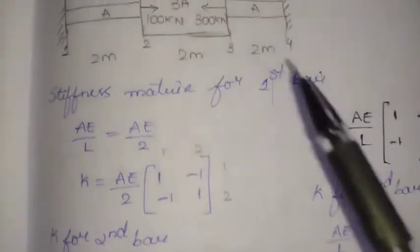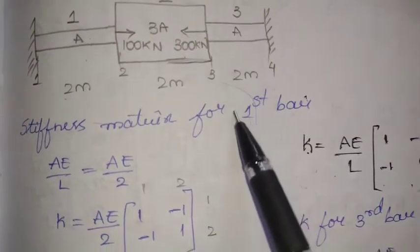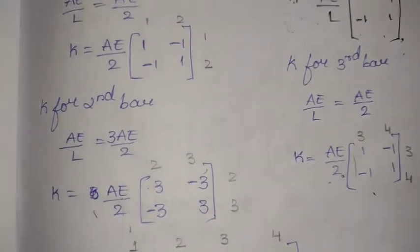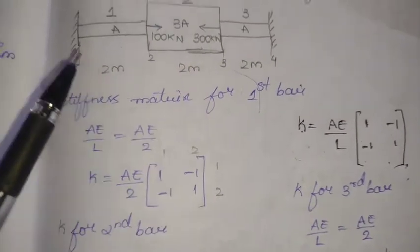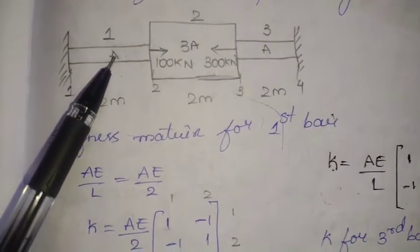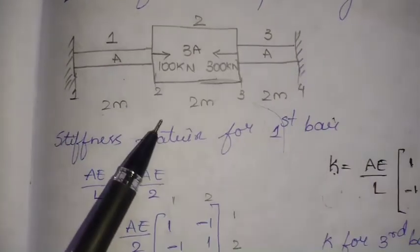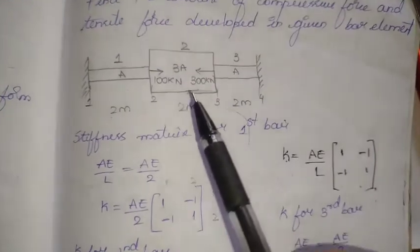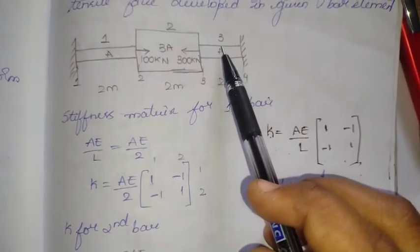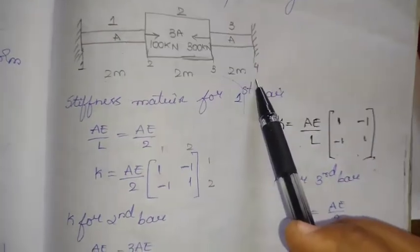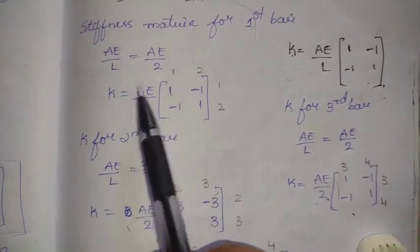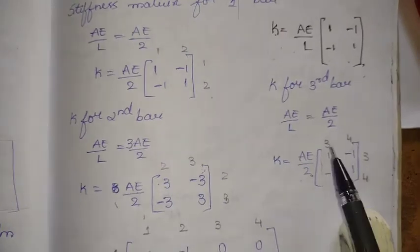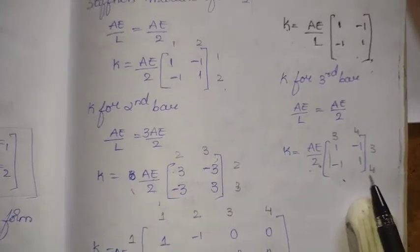These are the nodes at which each element is defined. The first bar is between nodes 1 and 2; the second element is between nodes 2 and 3; the third bar is between nodes 3 and 4. We assign the notation: for the first element, nodes 1 and 2; for the second, nodes 2 and 3; for the third, nodes 3 and 4.